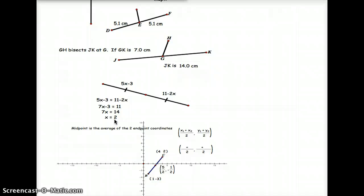If you said the length of the segment was 7 units, then you would be correct, because 5 times 2 is 10, plugging it in back here using substitution, 5 times 2 is 10, minus 3 is 7. Here, 11 minus 2 times 2, 2 times 2 is 4, 11 minus 4 is 7.